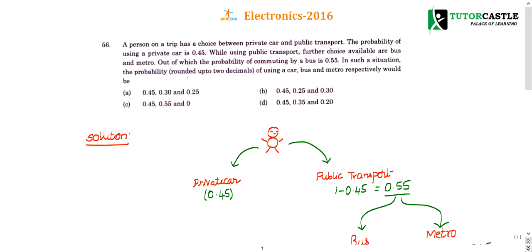Let me elaborate by reading the question itself. There is a person who can travel through a private car or through public transport. The probability of using a private vehicle is 0.45, so obviously the public vehicle will be 1 minus 0.45, which is 0.55.